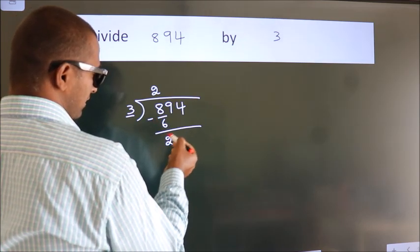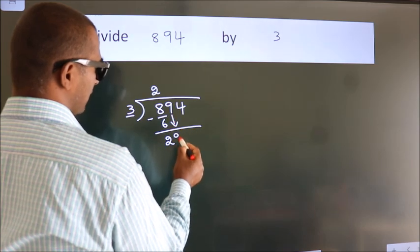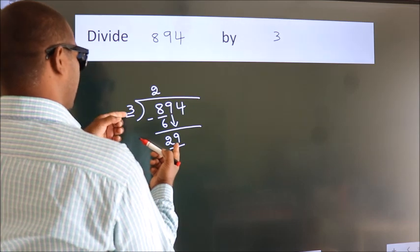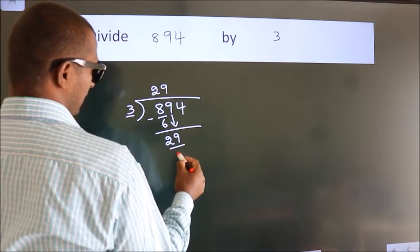After this, bring down the beside number. So 9 down. So 29. A number close to 29 in 3 table is 3 times 9, which is 27.